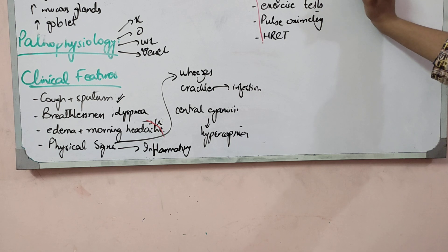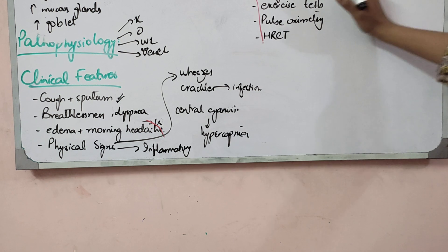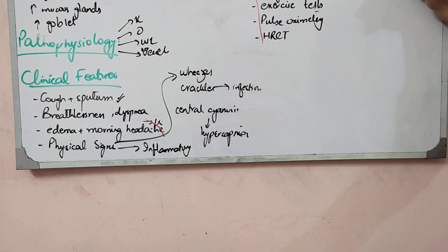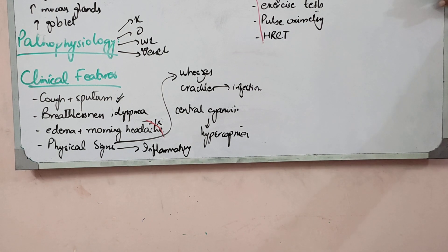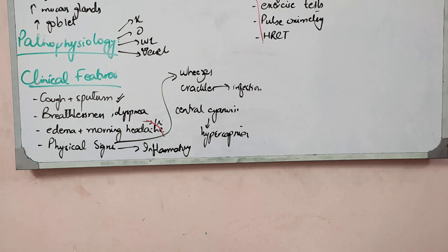Spirometry is very diagnostic. In all obstructive lung diseases, FEV1 by FVC decreases — this is also decreased in asthma. So spirometry confirms it is an obstructive lung disease. Lung volume testing is also important — because the lung is hyperinflated, the capacity is increased. Lung volume is measured using the helium dilution method, which I have already explained, so I will not repeat it.